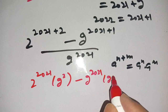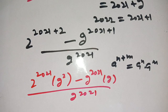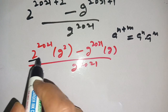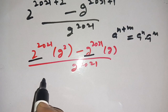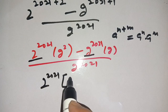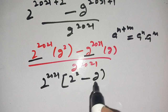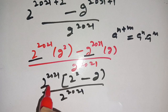In the next step we factor out 2 power 2021 from both terms in the numerator. We get 2 power 2021 times (2 power 2 minus 2), divided by 2 power 2021.